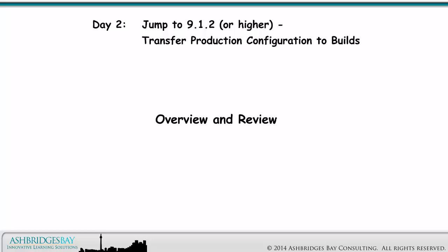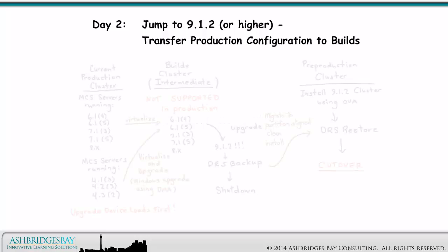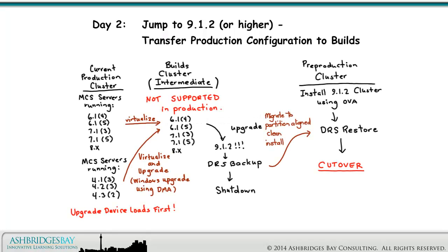Let's start with a quick overview and review. This is an overview of the Jump, Upgrade, and Virtualization. This drawing looks at transferring the Production Configuration to the Builds cluster — this is the last step in virtualizing the Production cluster in the Builds cluster.